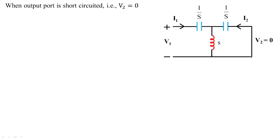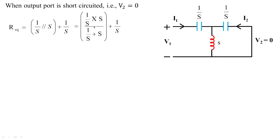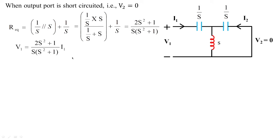When the output port is shorted (V2 = 0), the 1/s and s branches are in parallel, and that parallel combination is in series with the leading 1/s element. The parallel combination of 1/s and s = (1/s · s)/(1/s + s) = 1/((s²+1)/s) = s/(s²+1). So R_eq = s/(s²+1) + 1/s = (2s²+1)/(s(s²+1)), giving V1 = (2s²+1)/(s(s²+1)) · I1.